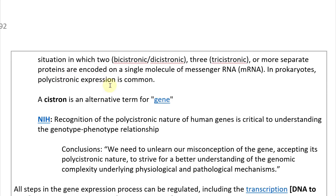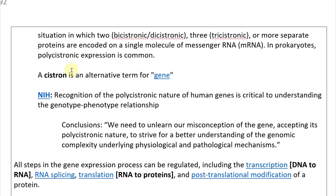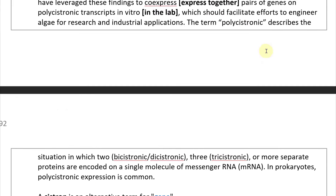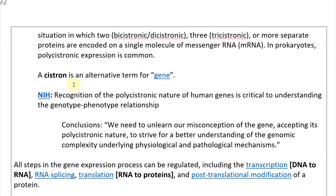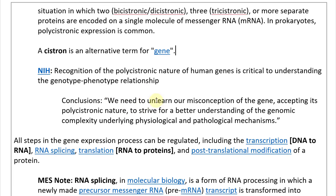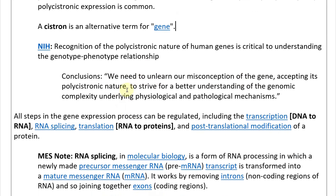The term 'polycistronic' describes a situation in which two (bicistronic) or three (tricistronic) or more separate proteins are encoded on a single molecule of mRNA. In prokaryotes, polycistronic expression is common. According to the NIH: recognition of the polycistronic nature of human genes is critical to understanding the genotype-phenotype relationship. We need to accept the polycistronic nature of genes to achieve a better understanding of the genomic complexity underlying physiological and pathological mechanisms.